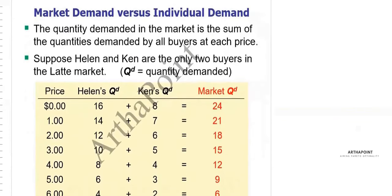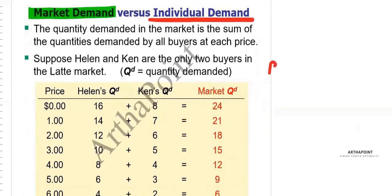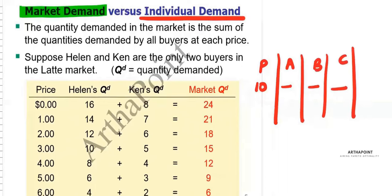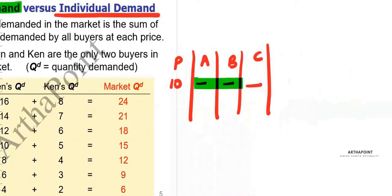Let us go ahead and introduce market demand. When we go ahead and add all the individual demands together at a given price — for example, when price is 10 rupees, what is the demand by individual A? What is the demand by individual B? What is the demand by individual C? If I add all the demands together, then I get the market demand.